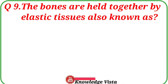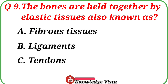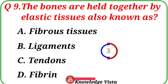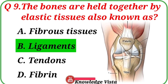Question number 9: The bones are held together by elastic tissues, also known as. Your options are: A. Fibrous tissues, B. Ligaments, C. Tendons, D. Fibrin. Correct answer is option B, Ligaments. Ligaments are the elastic tissues that hold the bones together.